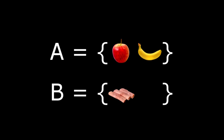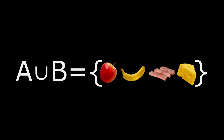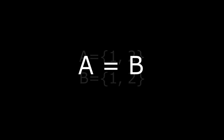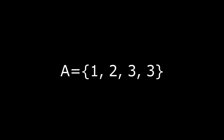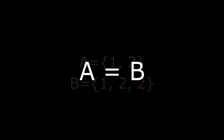For example, if I have a set containing an apple and a banana, and another containing ham and cheese, the union of these sets will contain an apple, banana, ham, and cheese. We can define two sets to be equal if and only if they have the same elements. For our purposes, every element of a set is unique, meaning duplicate elements can be ignored. So if set A has elements 1 and 2, and set B has elements 1, 2, and 2, we ignore the duplicated 2 and conclude that set A equals set B.